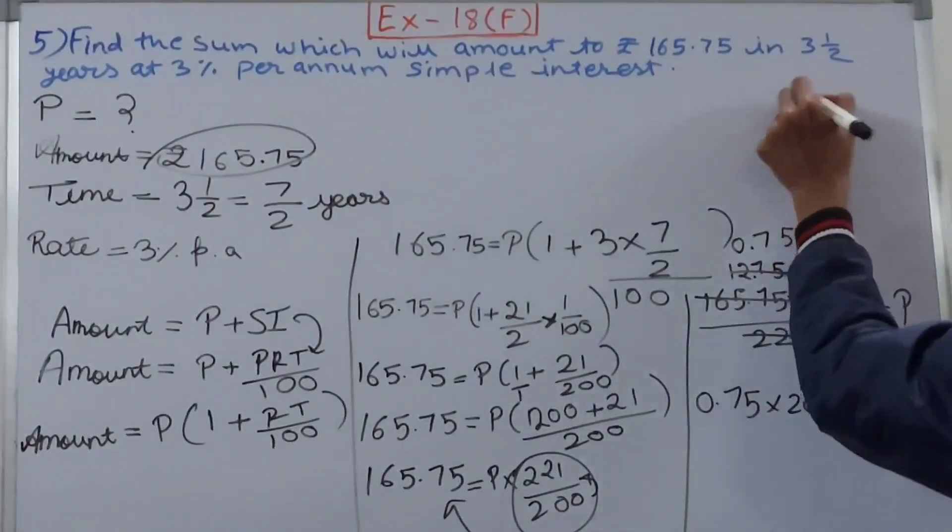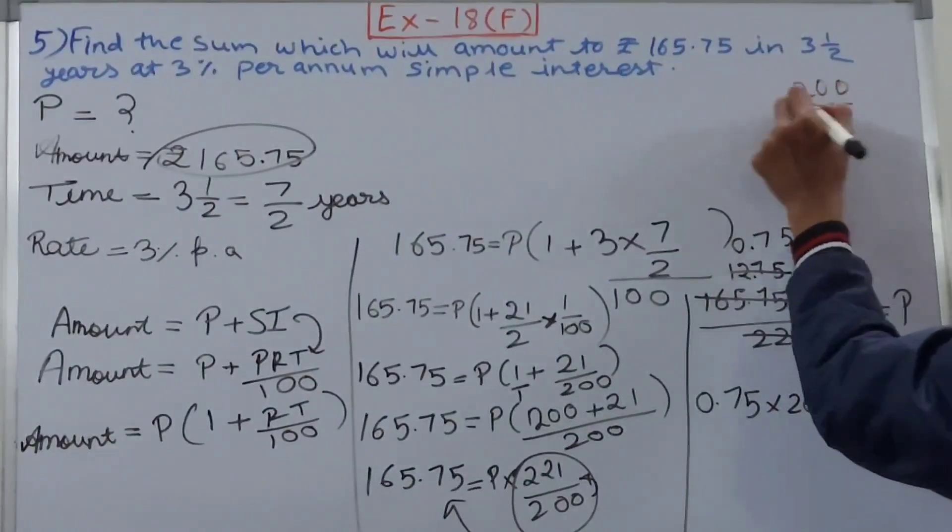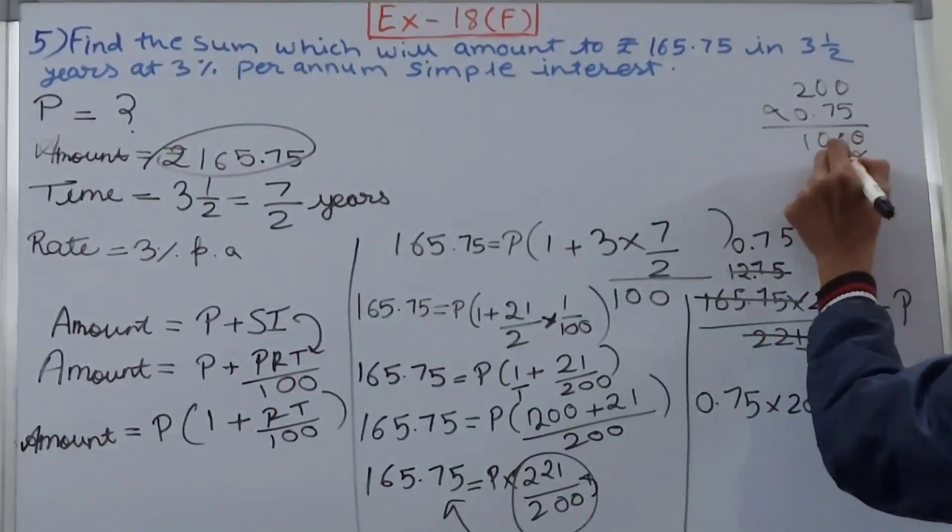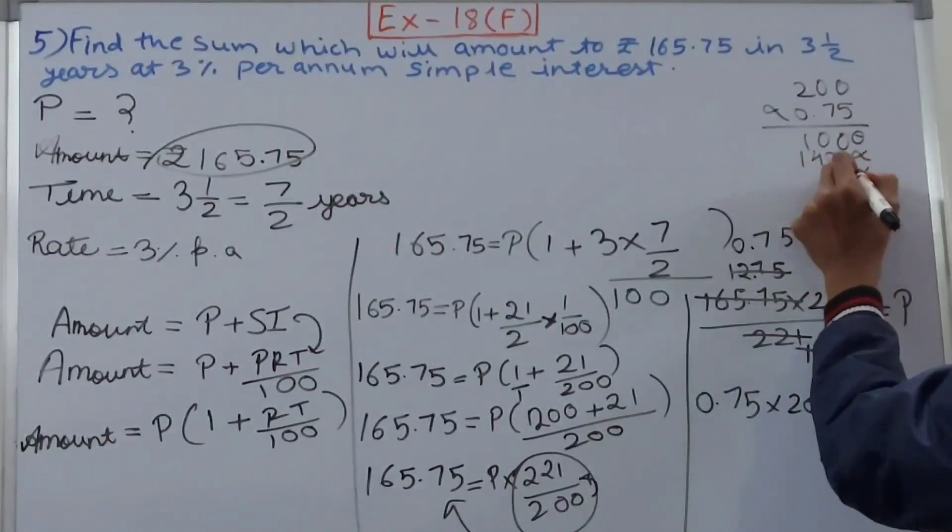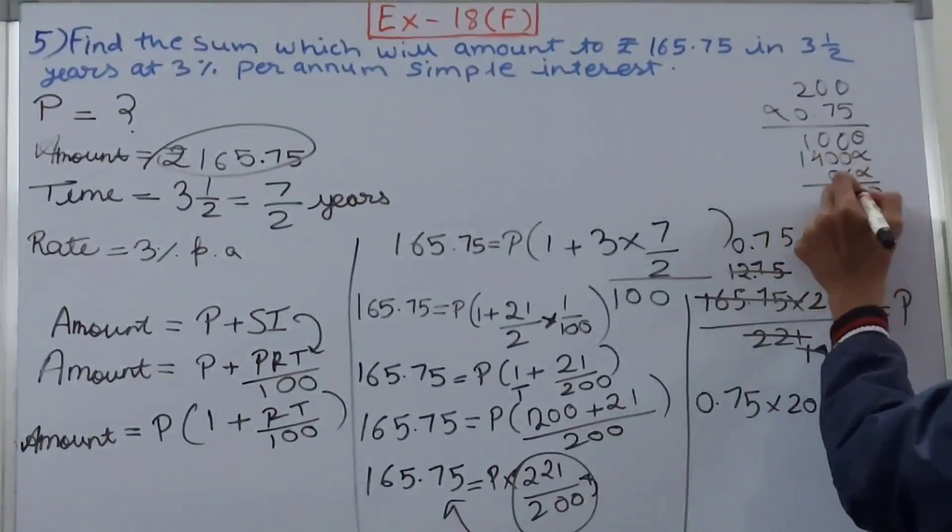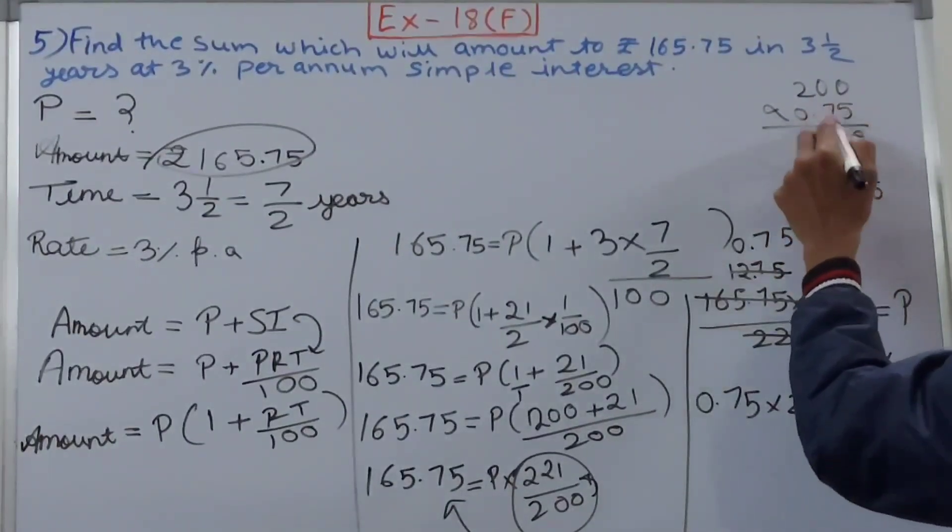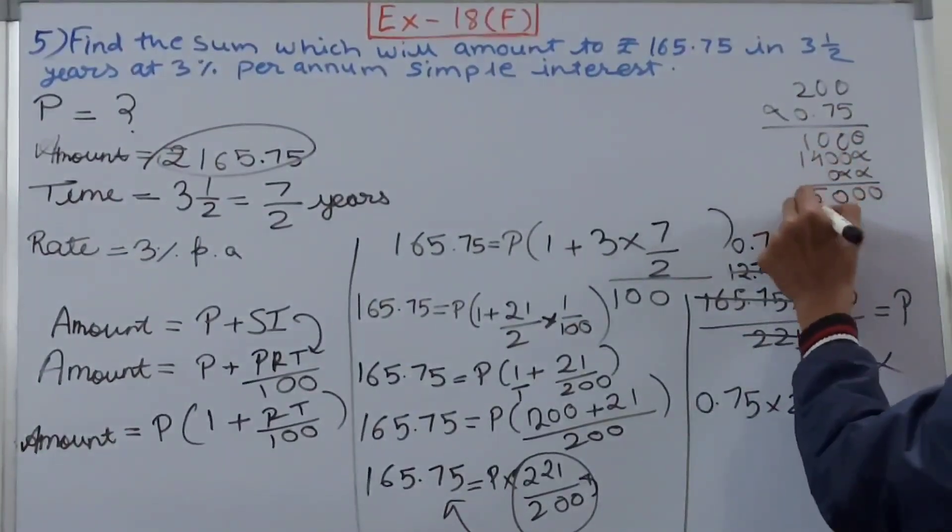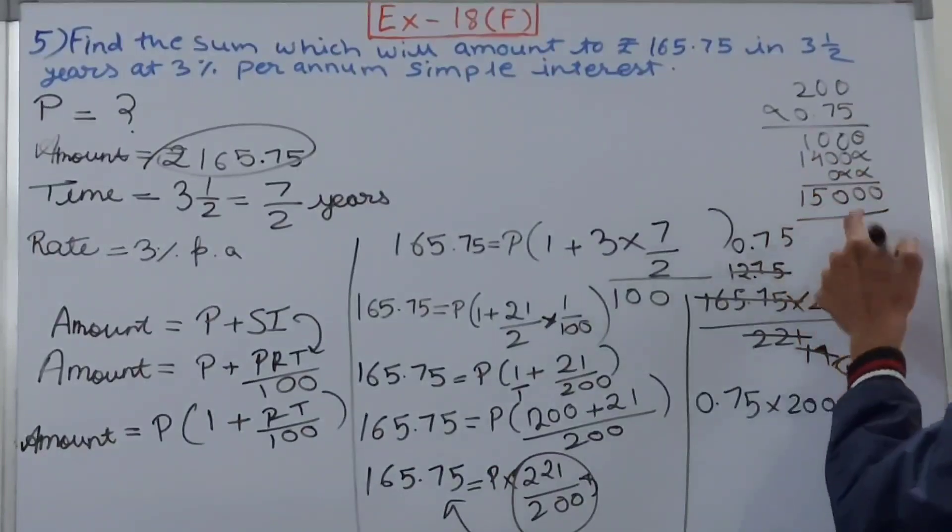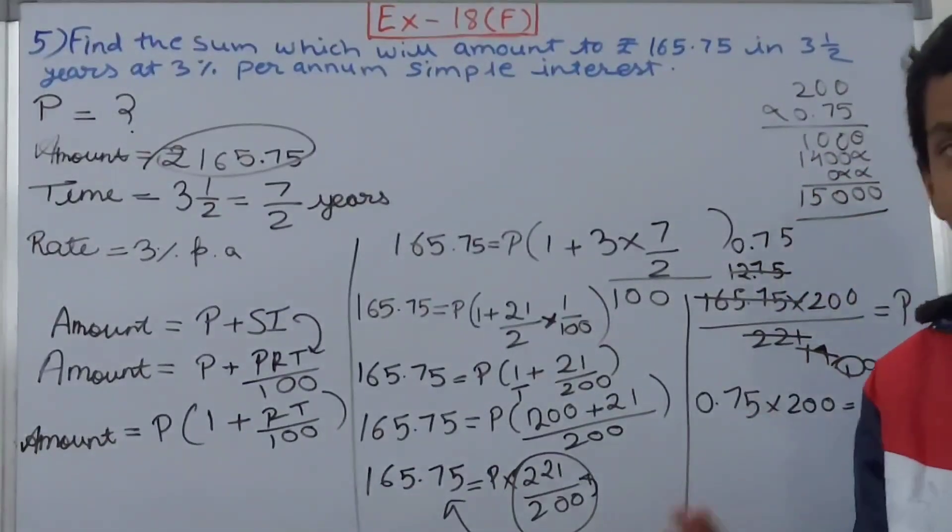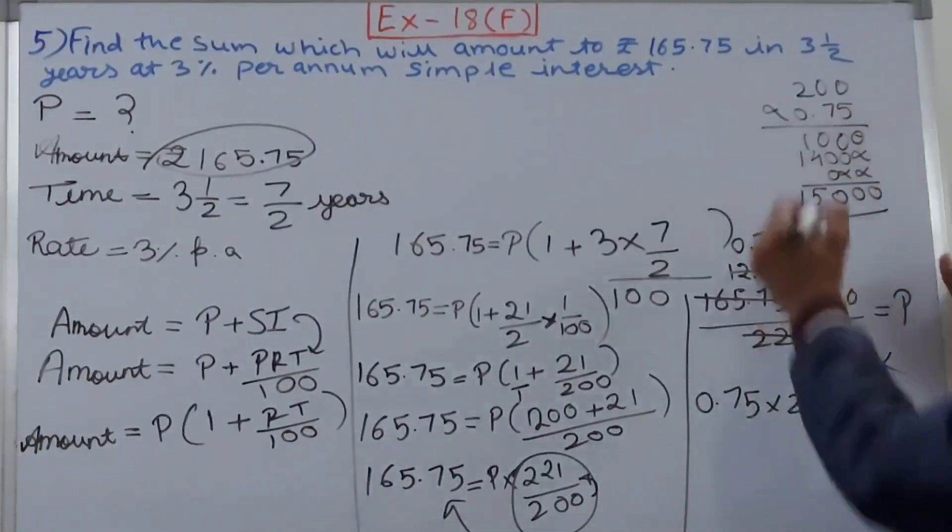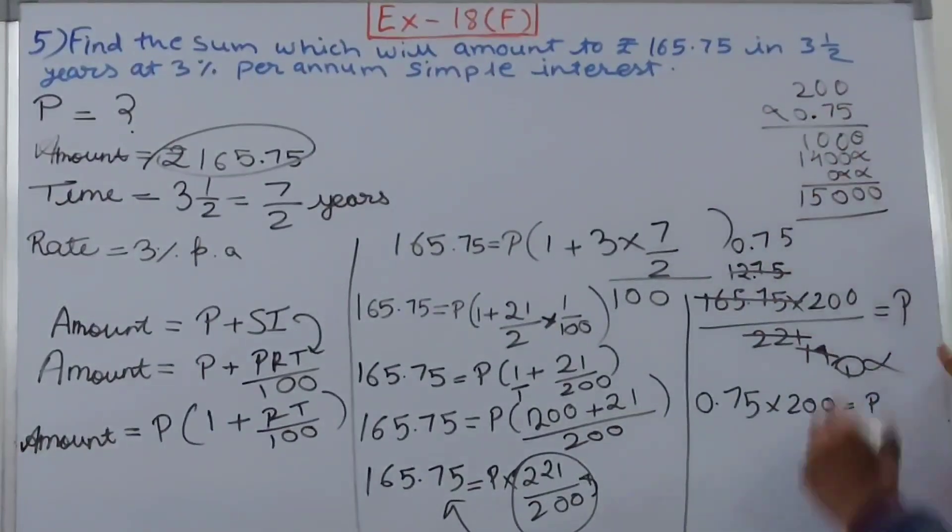Let's do the multiplication. 200 and 0.75: 5×1 is 5, 5×2 is 10. The decimal will play an important role. After two places our decimal is here in 0.75, so in our answer the decimal point will be after two places as well.